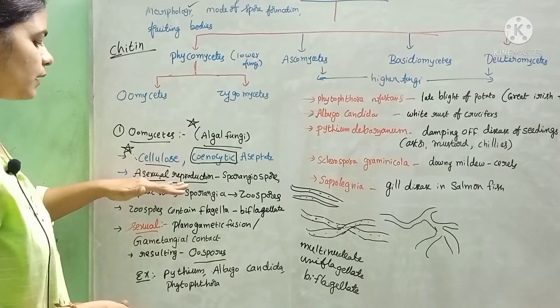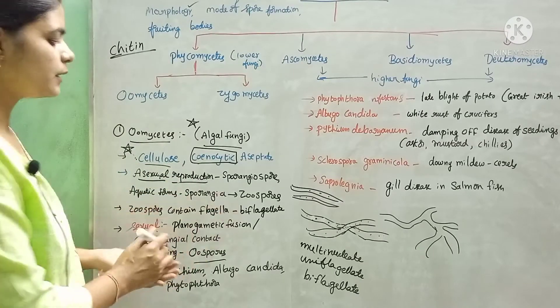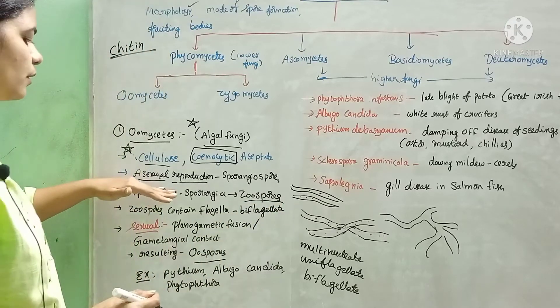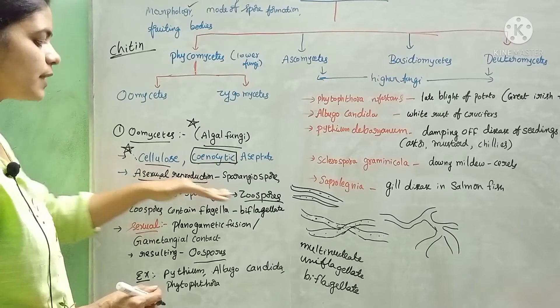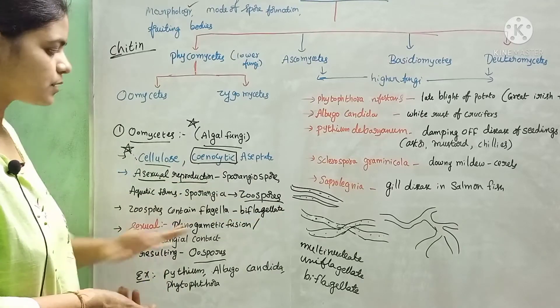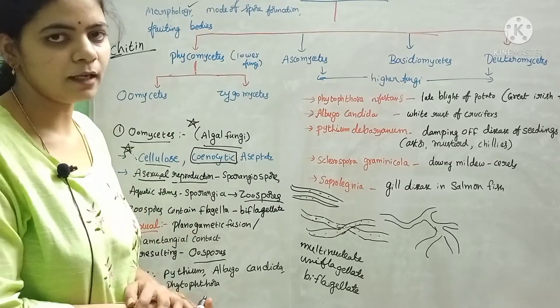In asexual reproduction, they produce spores. The names of those spores are zoospores. Zoospores are produced in asexual reproduction. By means of these spores, they will propagate.